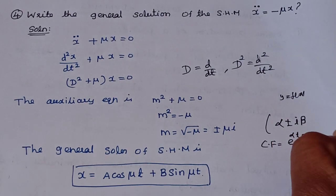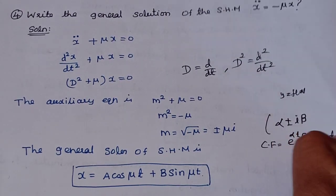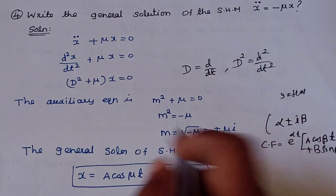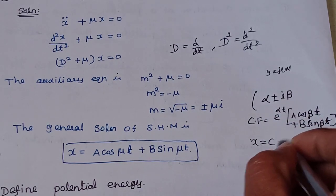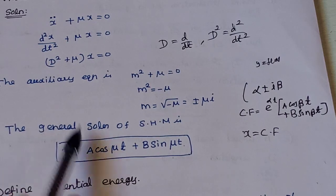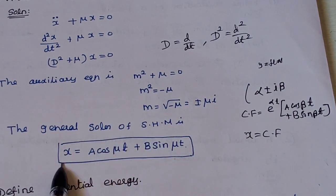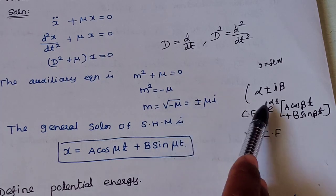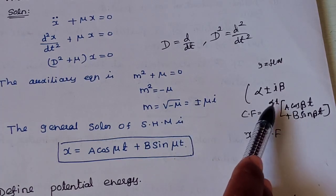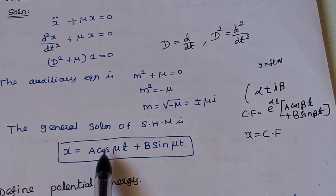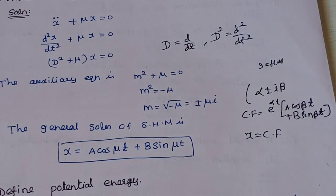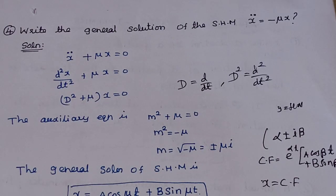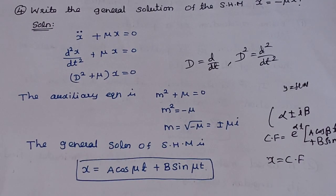Since the right-hand side is 0, the particular integral is zero. So the general solution equals the complementary function. The general solution of simple harmonic motion is x = e^(0·t)[A cos(√μ·t) + B sin(√μ·t)], and since e^0 = 1, it simplifies to x = A cos(√μ·t) + B sin(√μ·t). This solves the second order linear differential equation.